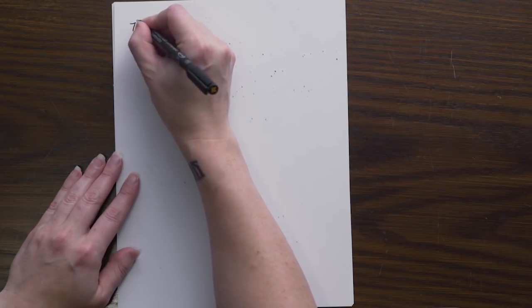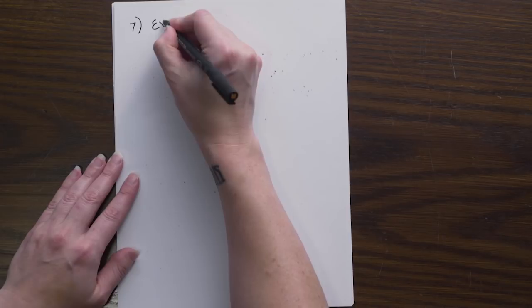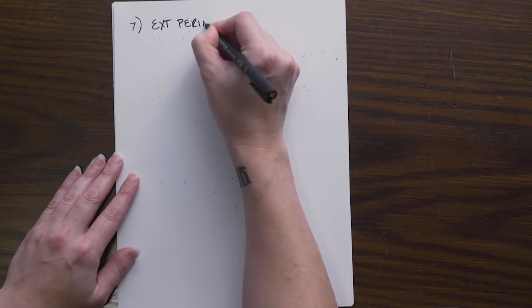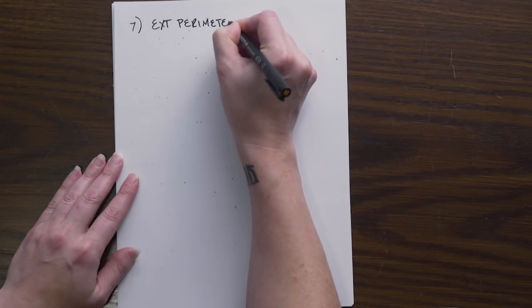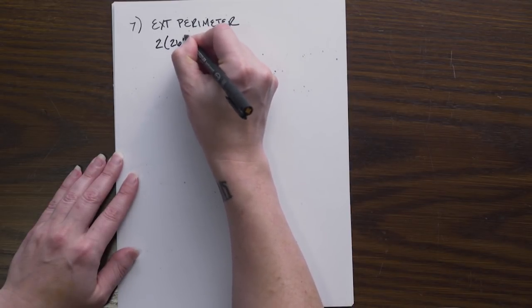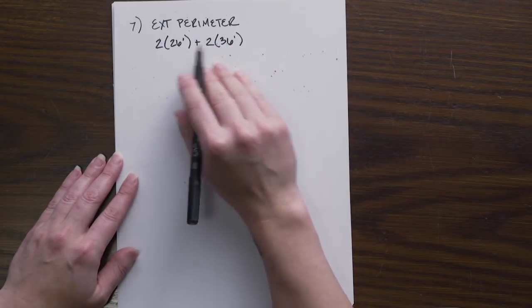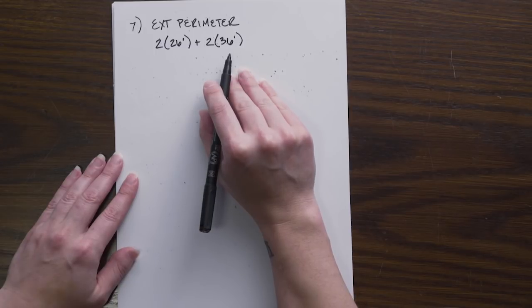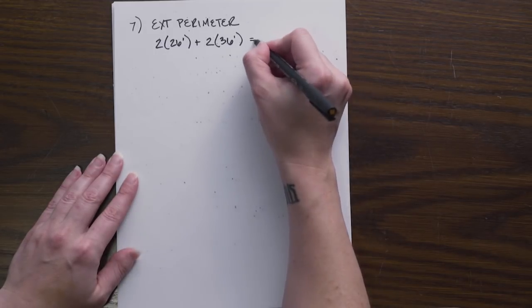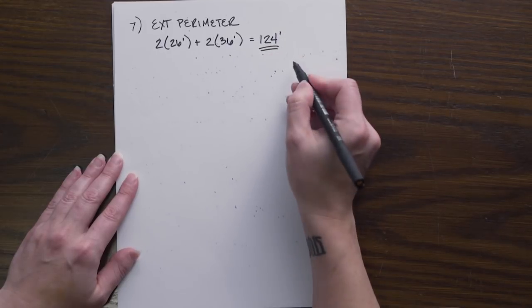Number seven - the first thing we're dealing with is the square foot method so we want to figure out what our exterior perimeter is for our structure. We've calculated this many times before: it is 2 times our width of 26 feet plus 2 times our length of 36 feet. We do not include the brick ledge, we're dealing with the framing now, so it is the 26 not the 26.4. So 124 feet is our perimeter.